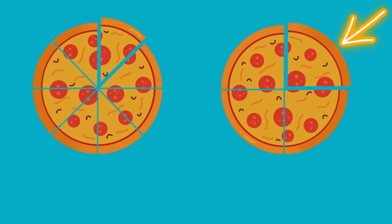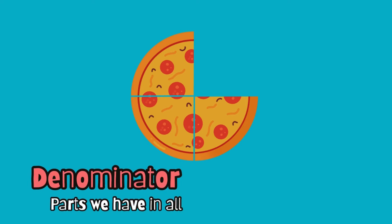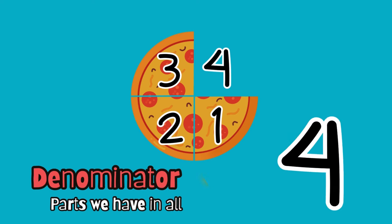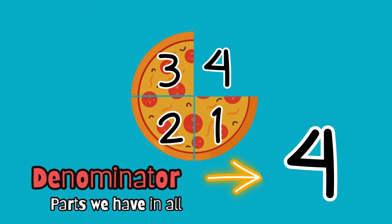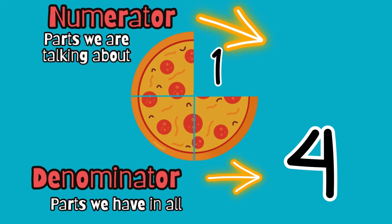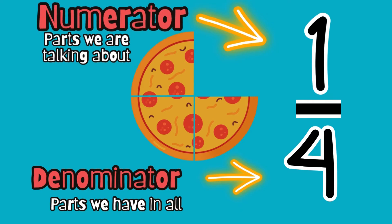For example, if we eat this slice of pizza, we can write a fraction of the pizza that we ate. If we ate one slice of this pizza, we have to focus on how many slices the pizza was cut into. It was 4, so 4 is my denominator. And then my numerator is how many slices of pizza did we eat, and it was 1. So 1 fourth of the pizza is my fraction.